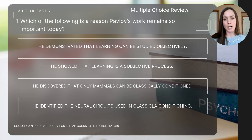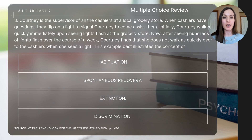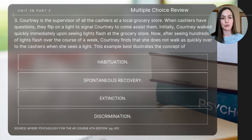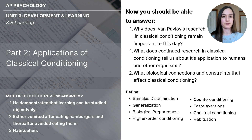Let's finish with a few review questions. Question one: which of the following is a reason Pavlov's work remains so important today? Question two: which of the following is an example of a taste aversion? Question three: Courtney is the supervisor of cashiers at a local grocery store. When cashiers have questions, they flip on a light to signal Courtney. Initially, Courtney walked quickly upon seeing the lights flash. Now, after seeing hundreds of lights flash over the course of a week, Courtney does not walk as quickly to the cashiers when she sees a light. This is an example of — the answers are shown on the left side of the screen, and the key focus questions and vocabulary concepts are on the right.